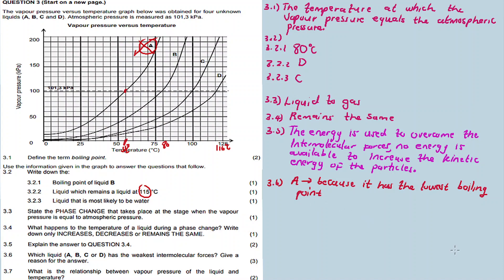Question 3.7: What is the relationship between the vapor pressure of the liquid and temperature? As the temperature increases, the vapor pressure increases. That's the relationship between vapor pressure and temperature on these graphs.